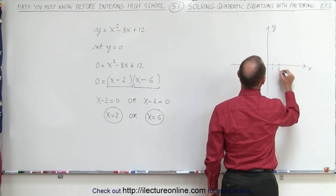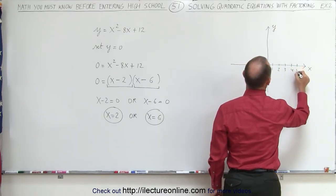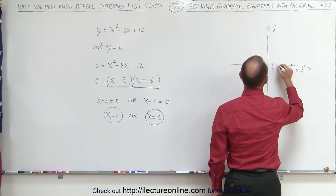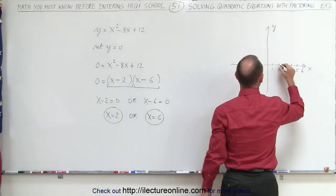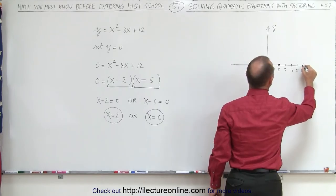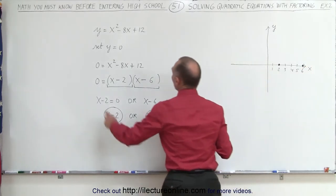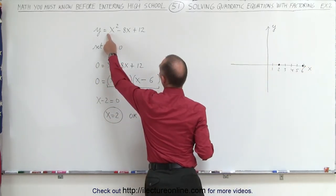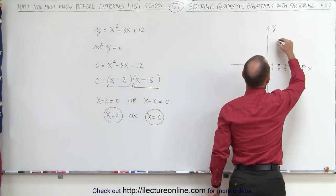So this is 1, 2, 3, 4, 5, and 6. We know that the graph crosses at x = 2 and it crosses again at x = 6. Since the number in front of the x² term is positive, we know that the parabola opens upward.